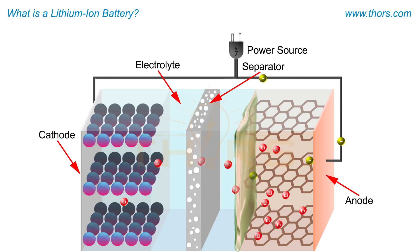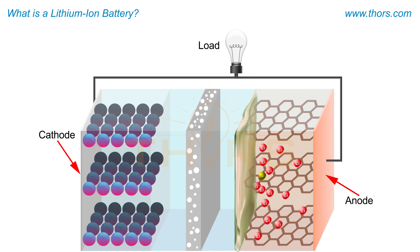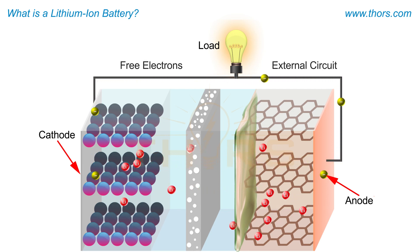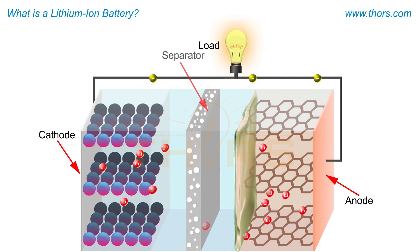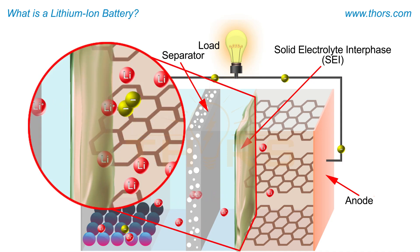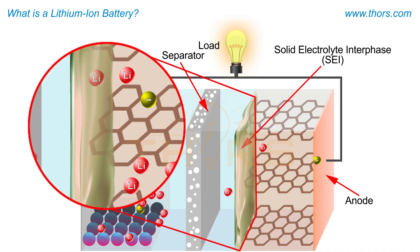In a lithium-ion battery, the internal movement of lithium ions between the electrodes creates free electrons that move through an external circuit, generating current. The separator, along with the solid electrolyte interface (SEI), prevents the electrons from flowing through the electrolyte, which helps the electrons move through the external circuit.